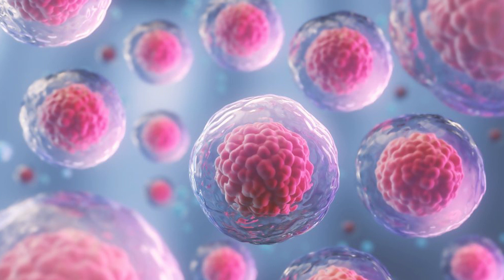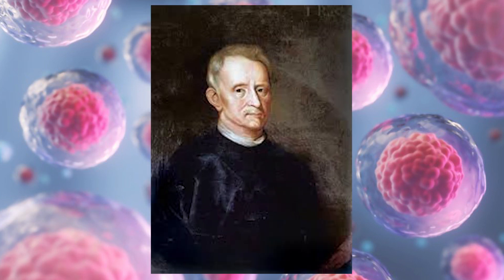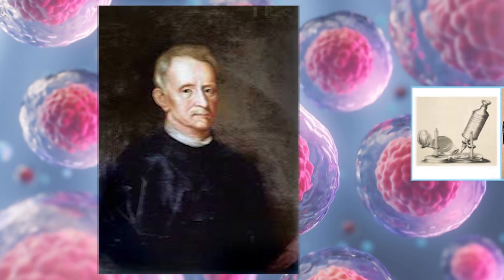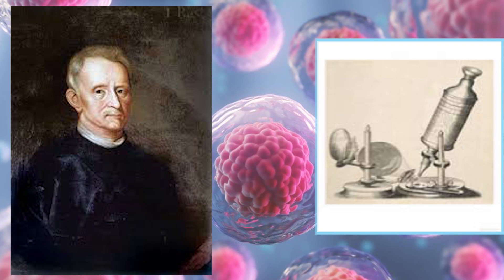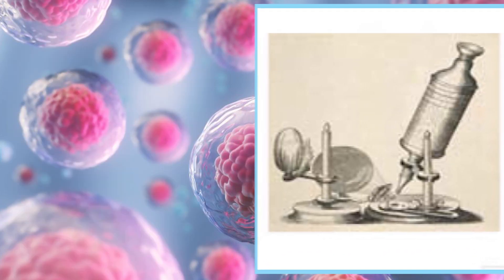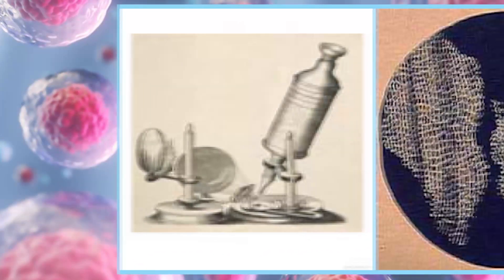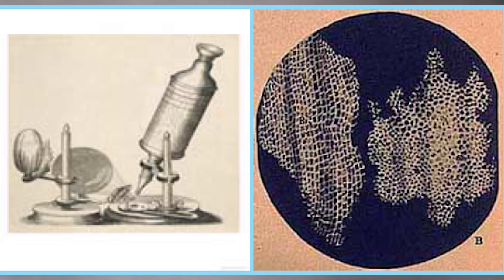First, the idea of the cell was given by the scientist Robert Hooke. He observed a section of cork using his microscope and observed structures like chambers in a beehive. He named those hexagonal structures as cells.